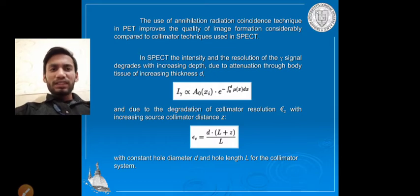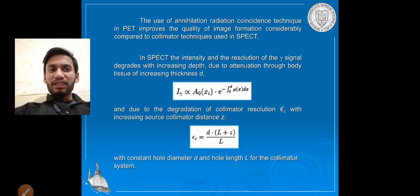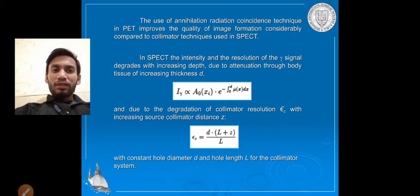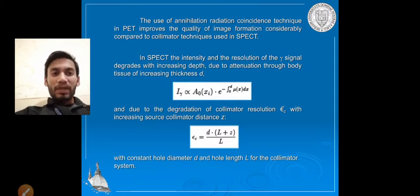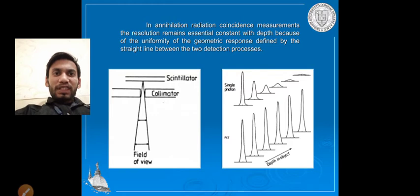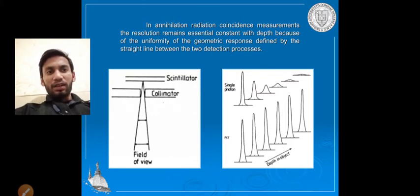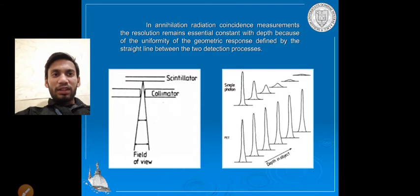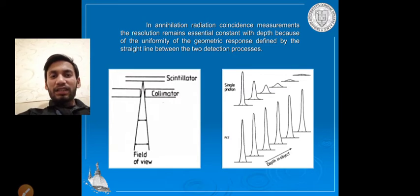The collimator resolution formula involves: the fixed diameter multiplied by the length of the collimator plus a constant, added to the source-to-collimator distance Z, divided by the collimator system distance. This relates to the single photon technique, showing how intensity decreases with depth in the object.